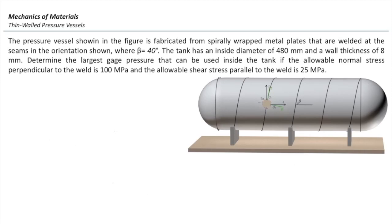The pressure vessel shown in this figure is fabricated from spirally wrapped metal plates that are welded at the seams in the orientation shown. Beta is assumed to be 40 degrees. The tank has an inside diameter of 480mm and a wall thickness of 8mm.